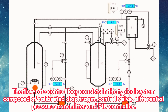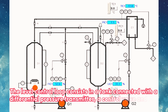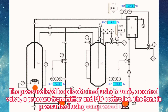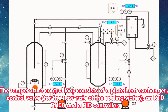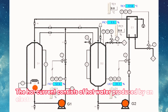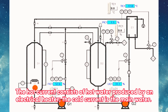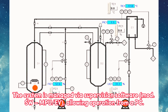The flow rate control loop consists of a calibrated diaphragm, control valve, differential pressure transmitter, and PID controller. The level control loop consists of a tank connected with a differential pressure transmitter, a control valve, and PID controller. The pressure control loop uses a tank, a control valve, a pressure transmitter, and a PID controller — the tank is pressurized using compressed air. The temperature control loop consists of a plate heat exchanger, a control valve for the flow rate of cooling water, an RTD PT100, and a PID controller. The hot current consists of hot water produced by an electrical heater; the cold current is the main water. The system is managed via supervision software mod SWMPUDEV, allowing operation from a PC.